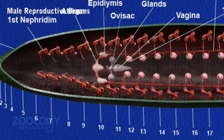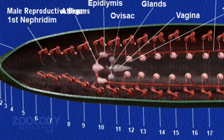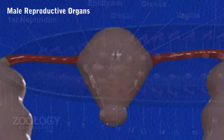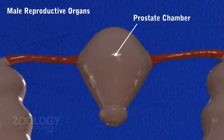Atrium consists of two parts: a vase-like broad anterior prostate chamber and a neck-like narrow posteriorly directed penis sac.